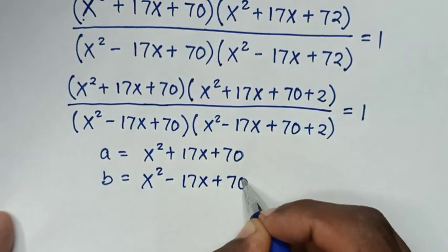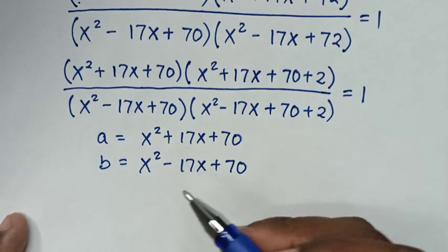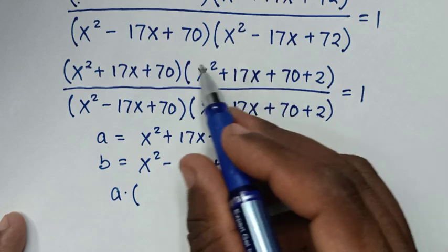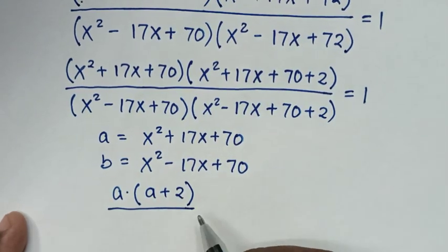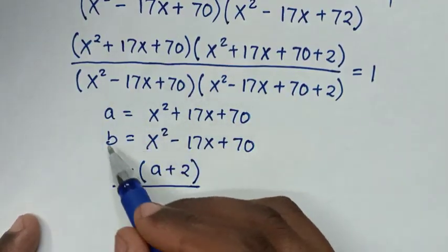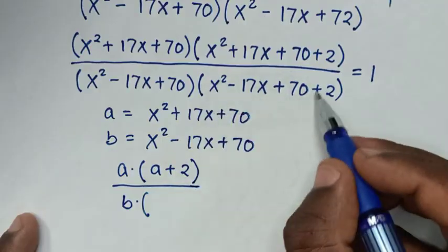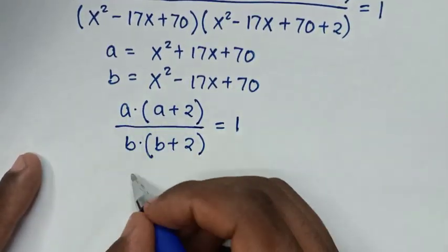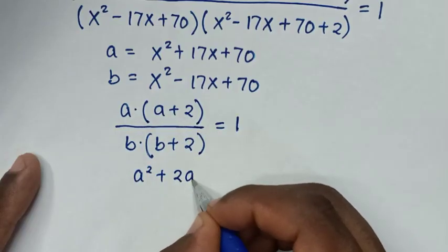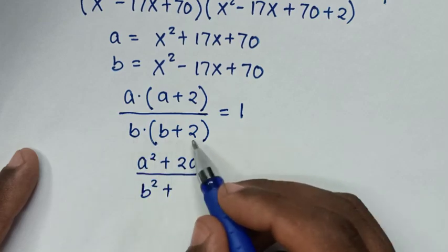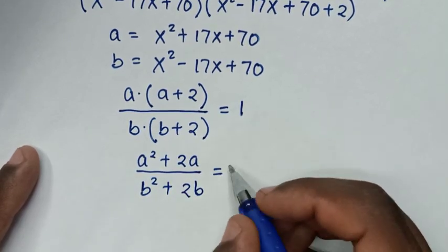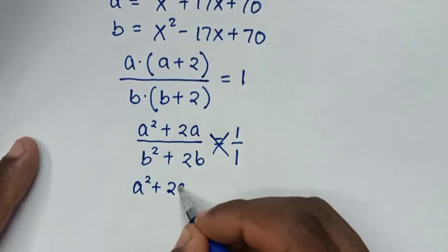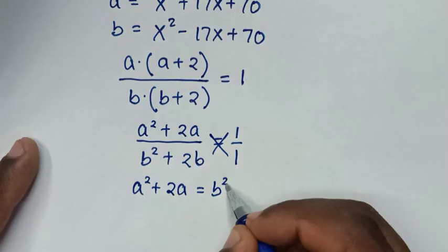The only difference between a and b is the sign of 17x. Substituting, the equation becomes a(a+2) over b(b+2) equals 1, which is the same as 1 over 1. Cross multiplying gives a²+2a equals b²+2b.